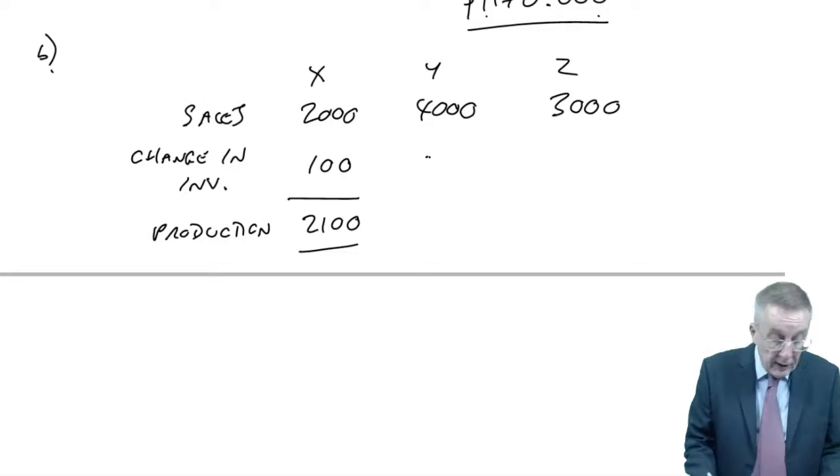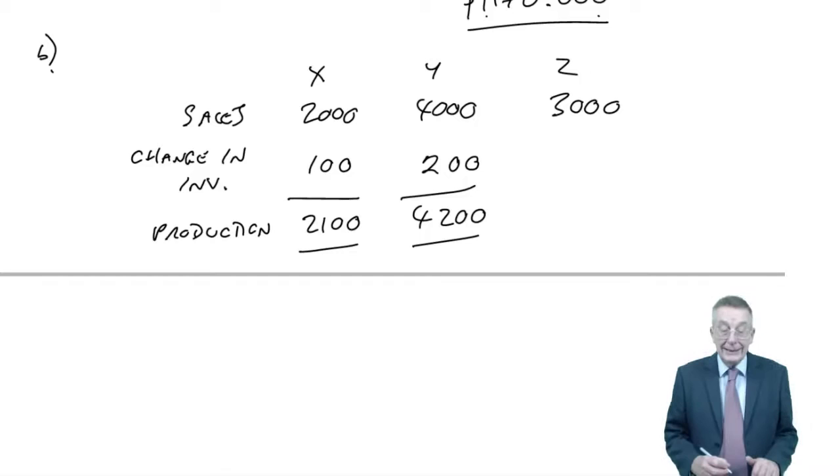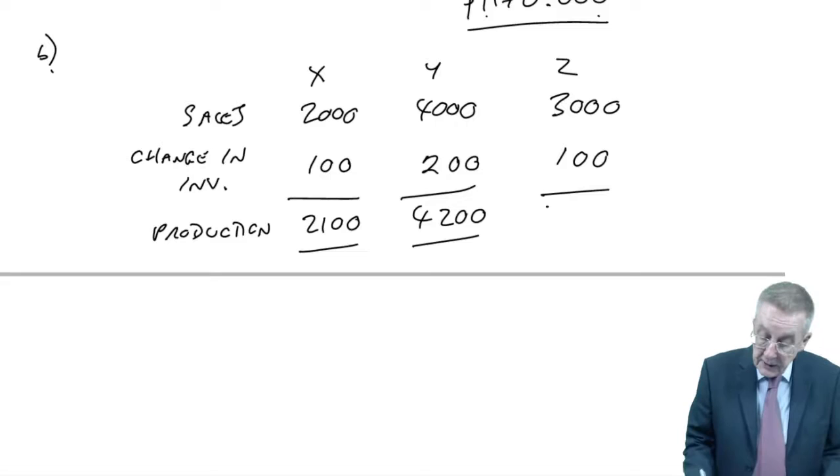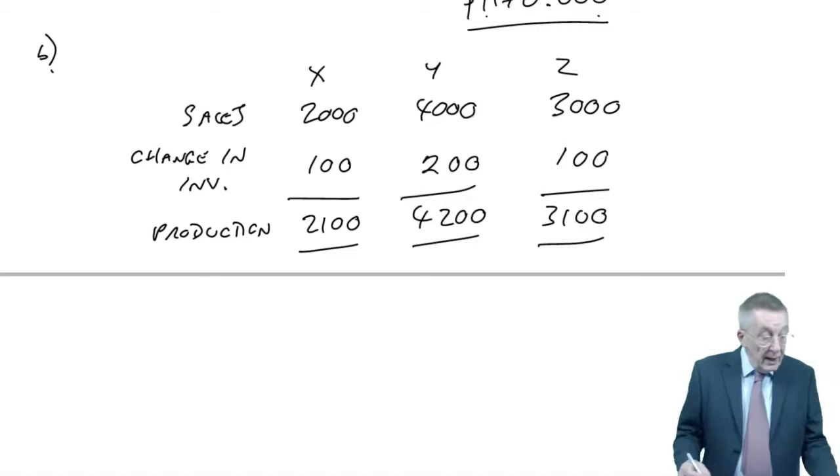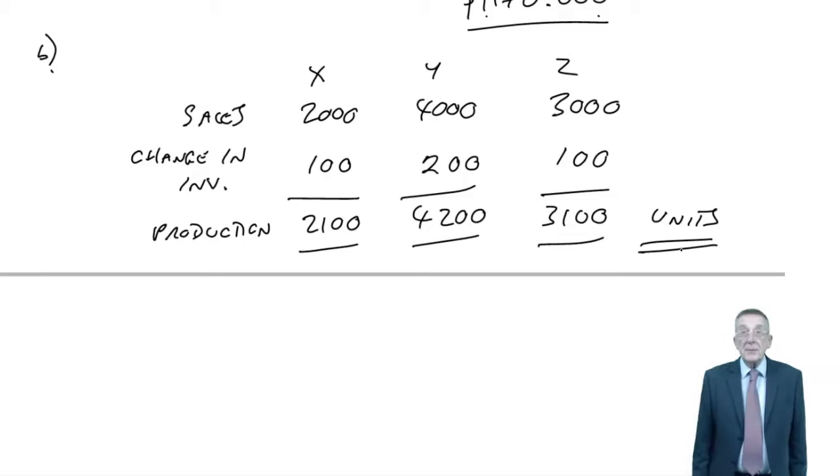And, of course, if you can do one, you can do all three. Y, yes, again, we're going to increase the inventory, this time by 200 units, so we need to produce 4,200. And Z, again, increase from 7 to 8 by 100 units, 3,100. There is our budget in units, as I've said several times. It's a plan.